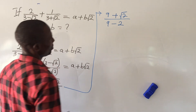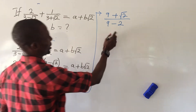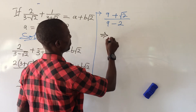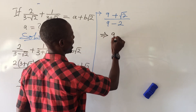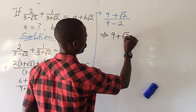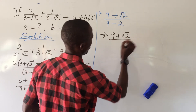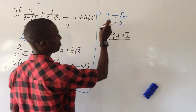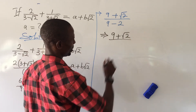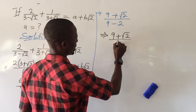Going back to the solution: we now have 9 plus root 2, all over 7 — since 9 minus 2 gives us 7.